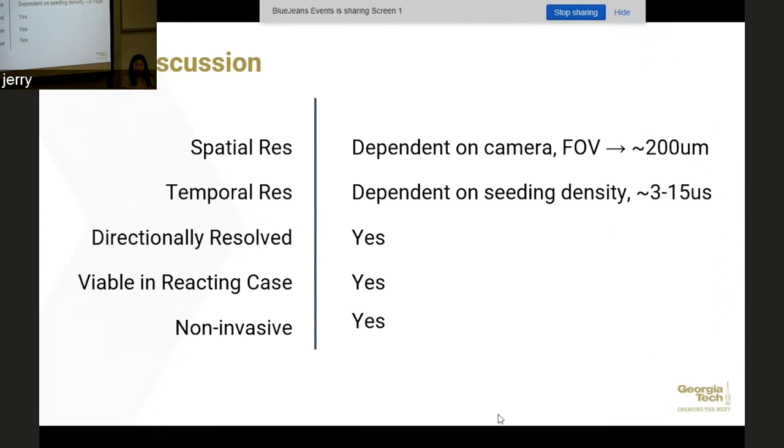Okay, so how it fares with our metrics. The spatial resolution is dependent on the camera, your camera resolution and your field of view. In our case, we use a very high resolution camera around 29 megapixels. Our field of view was only around 20 millimeters by 30 millimeters in length and width, so this corresponded to spatial resolution of around 200 micron. Your temporal resolution, similarly to LDV, is dependent on your seeding density. For the flows that we were looking at, this was around 3 to 15 microseconds. For whether it's directionally resolved, it is, especially since we were using TOMO-PIV. We were able to get the 3D velocity components of each particle. Is this viable in the reacting case? Yes. Same with LDV. You're not actually sticking anything in the flow. You're just taking images. And same with non-invasive. You're not actually affecting the flow by measuring it.